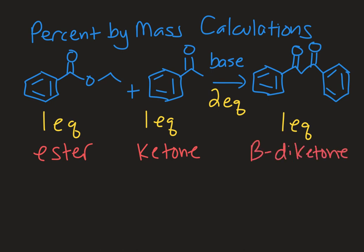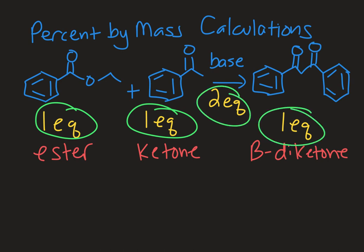And I have my equivalencies drawn underneath, so one equivalent of ester plus one equivalent of ketone and two equivalents of base will yield one equivalent of my beta-di-ketone. So we commonly use in pre-lab calculations mole-to-mole ratios from our balanced chemical equation as well.